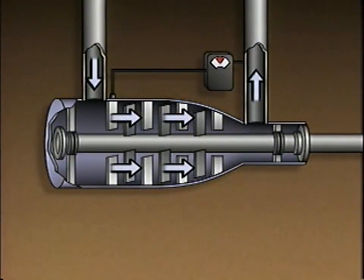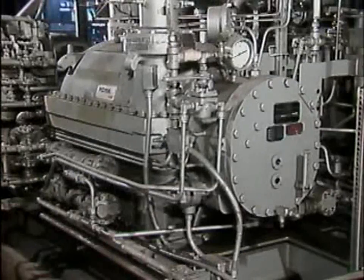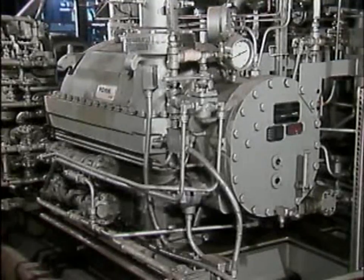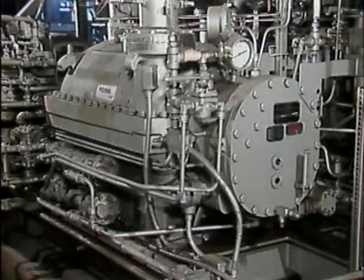So, by adjusting the flow of gas into the compressor, the control system maintains the discharge pressure of the compressor at the desired value. For a given discharge pressure, a compressor has a certain minimum flow rate. Below this flow rate, the compressor becomes unstable.